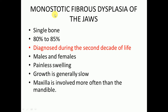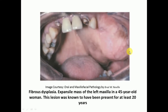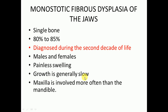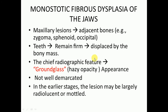Monostotic fibrous dysplasia means that a single bone is involved. It occurs in 80 to 85 percent of cases of fibrous dysplasia, and diagnosis is typically made during the second decade of life. Both males and females are equally affected. It causes painless swelling and growth is generally slow — which explains why a lesion can remain present for about 20 years.